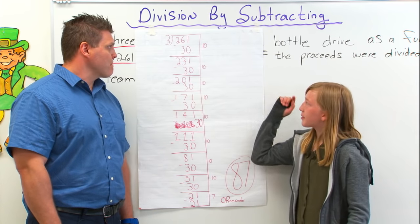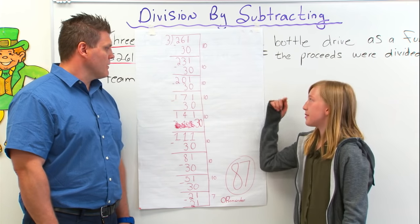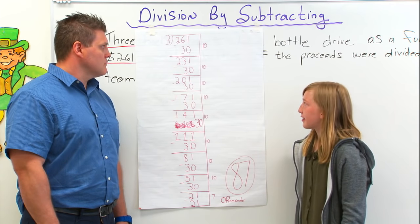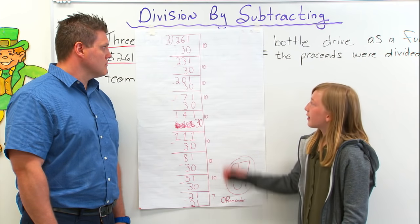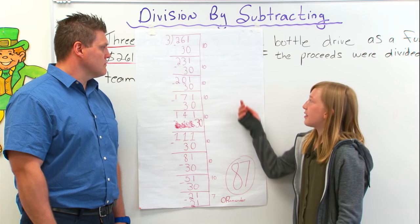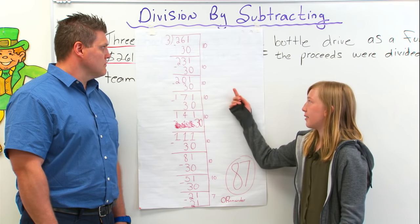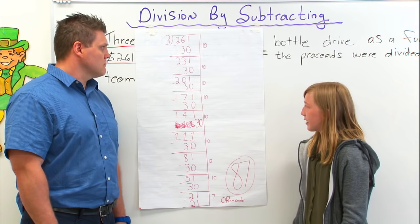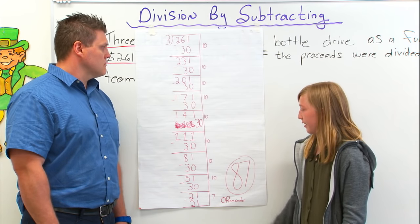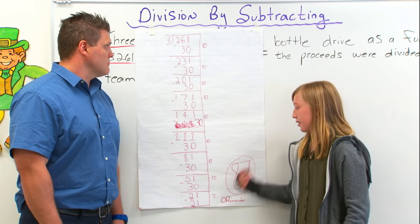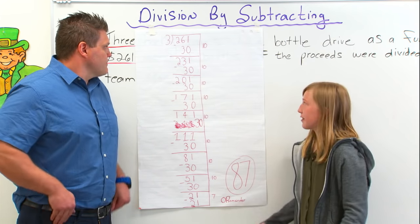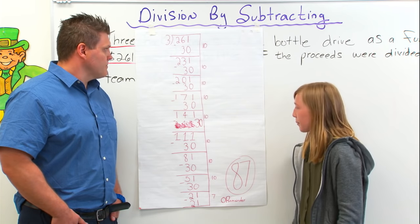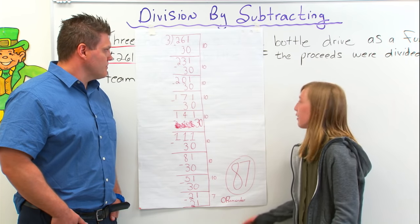I used 3 times 10 because I knew it was 30 and 30 is less than 261. I subtracted that and then I continued doing that step until I got to a number that was lower than 30 — and of course I couldn't use 30 because it would be zero.